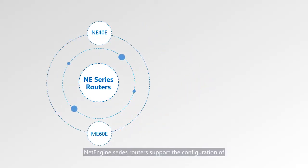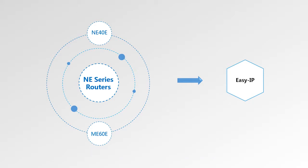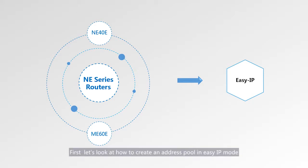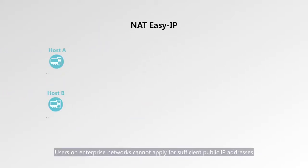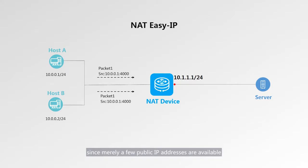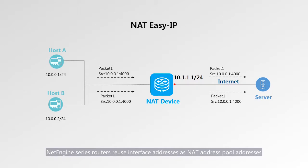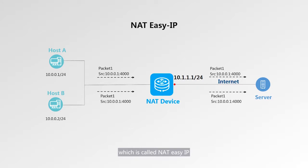NetEngine series routers support the configuration of NAT address pools in EZIP mode and the communication between internet devices such as hosts and servers in a hairpin scenario. Let's look at how to create an address pool in EZIP mode. Users on enterprise networks cannot apply for sufficient public IP addresses, so the NAT function is used for user access since merely a few public IP addresses are available. To make full use of limited public IP addresses, NetEngine series routers reuse interface addresses as NAT address pool addresses, which is called NAT EZIP.